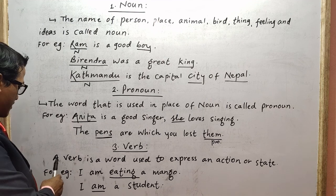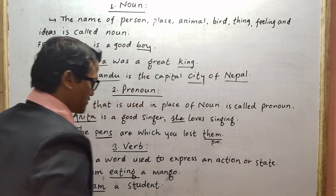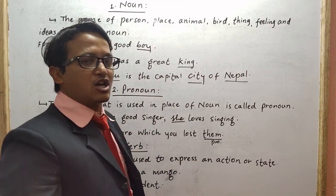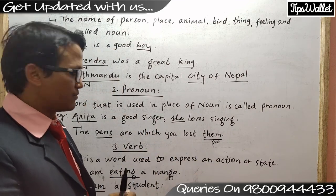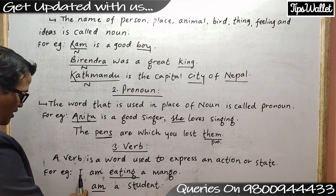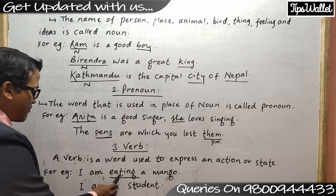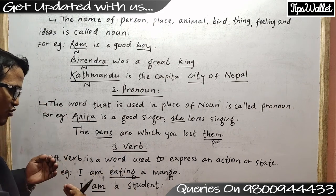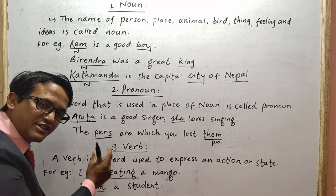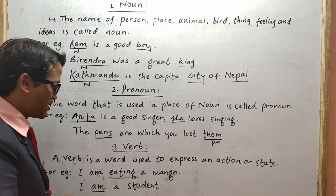So what is a verb? A verb is a word that is used to express an action or state. Whatever action is done, that is the verb. For example: 'I am eating.' Here 'eating' is the verb — it is a physical action. So 'eating' functions as the verb. Next example: 'I am a student.' Here 'am' is not a physical action, but it functions and works as a verb. That is why 'am' is a verb.